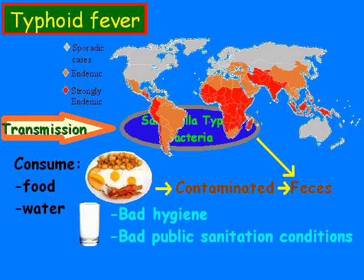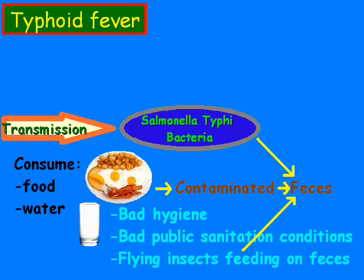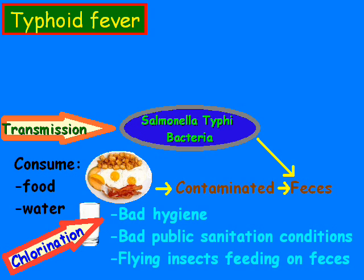You can also have flying insects that feed on the feces and can further contaminate food and water. Chlorination of water also helps reduce the risk of water being contaminated by the salmonella typhi bacteria.